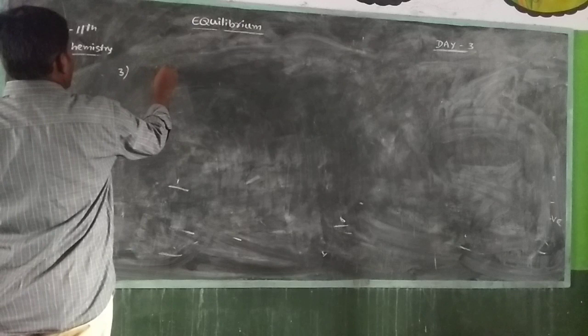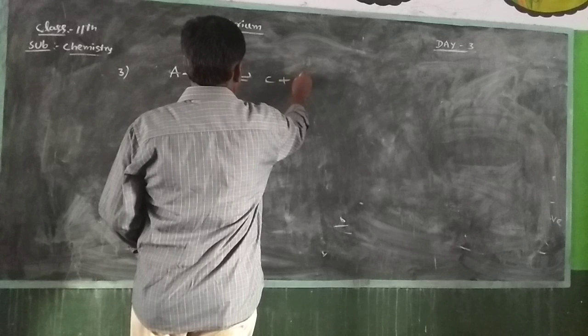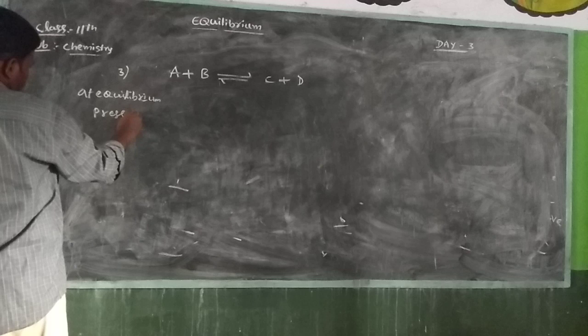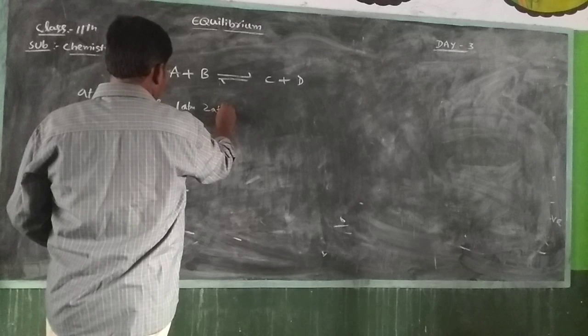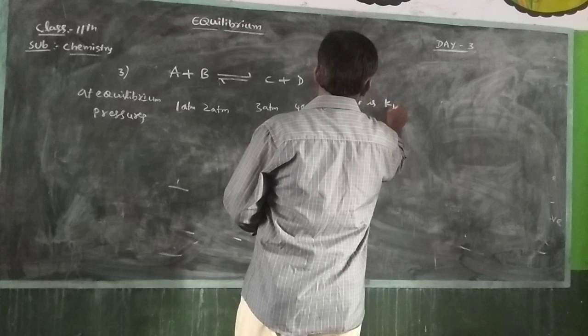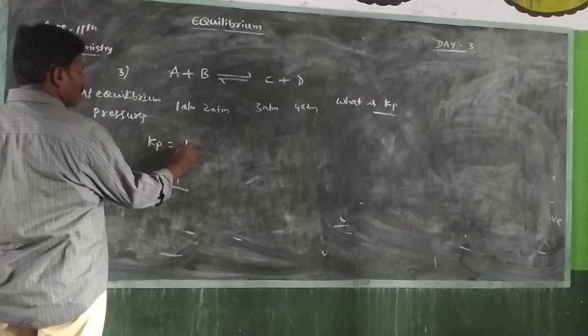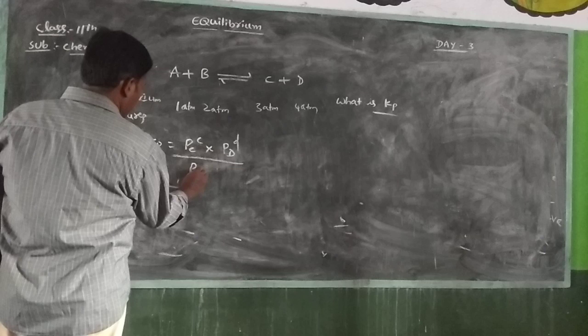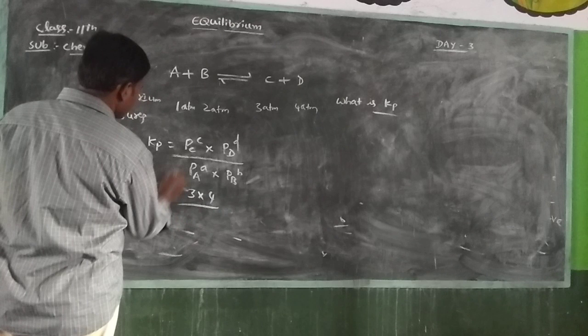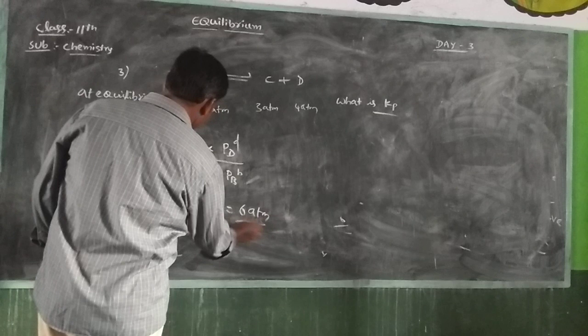Example 3: for the reaction A + B ⇌ C + D, at equilibrium partial pressures are 1 atm, 2 atm, 3 atm, 4 atm. Kp equals (partial pressure of C × partial pressure of D) / (partial pressure of A × partial pressure of B) equals (3×4)/(1×2) equals 6 atm. So Kp equals 6.